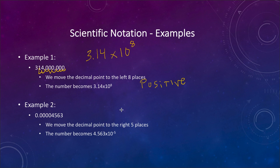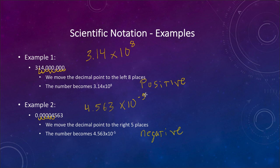Our second example goes the other direction. We have a very small number: 0.00004563. We're going to move the decimal point to the right — 5 places — until we get 4.563. Now we've moved it to the right, so it's going to be negative: 10 to the negative 5th. So we can write 0.00004563 as 4.563 times 10 to the negative 5th power, which is much easier to represent these large and small numbers.